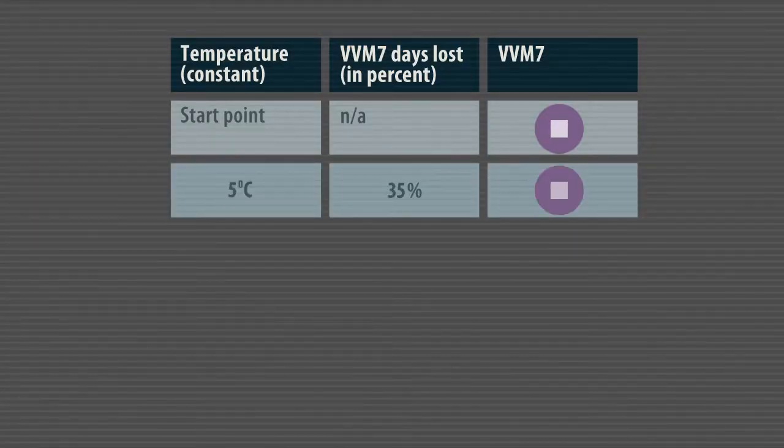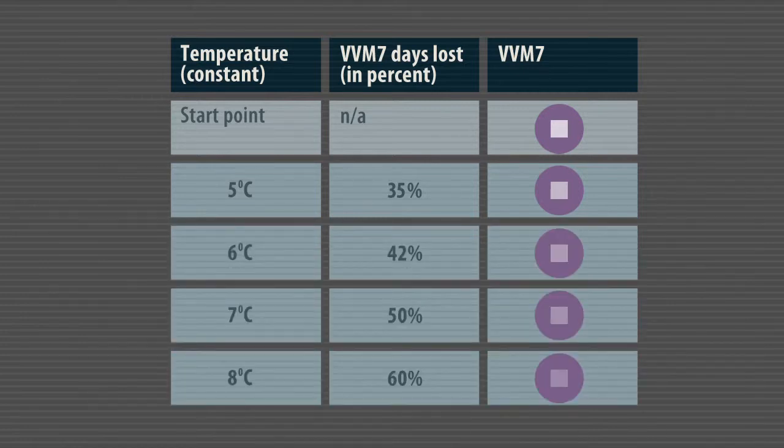In storage facilities, VVM status should always be checked and recorded on appropriate records. The most tricky situation happens with VVM 7-containing vaccines. Even when the temperature range is always kept within the recommended two to eight degrees Celsius — say, consistently at five degrees throughout an entire year — the VVM 7 vaccines will reach a 35% coloring by the end of the year. This is the normal reaction of VVM 7 and should not cause panic. However, keep in mind that if average storage temperatures are skewed towards eight degrees, the reaction will go faster.